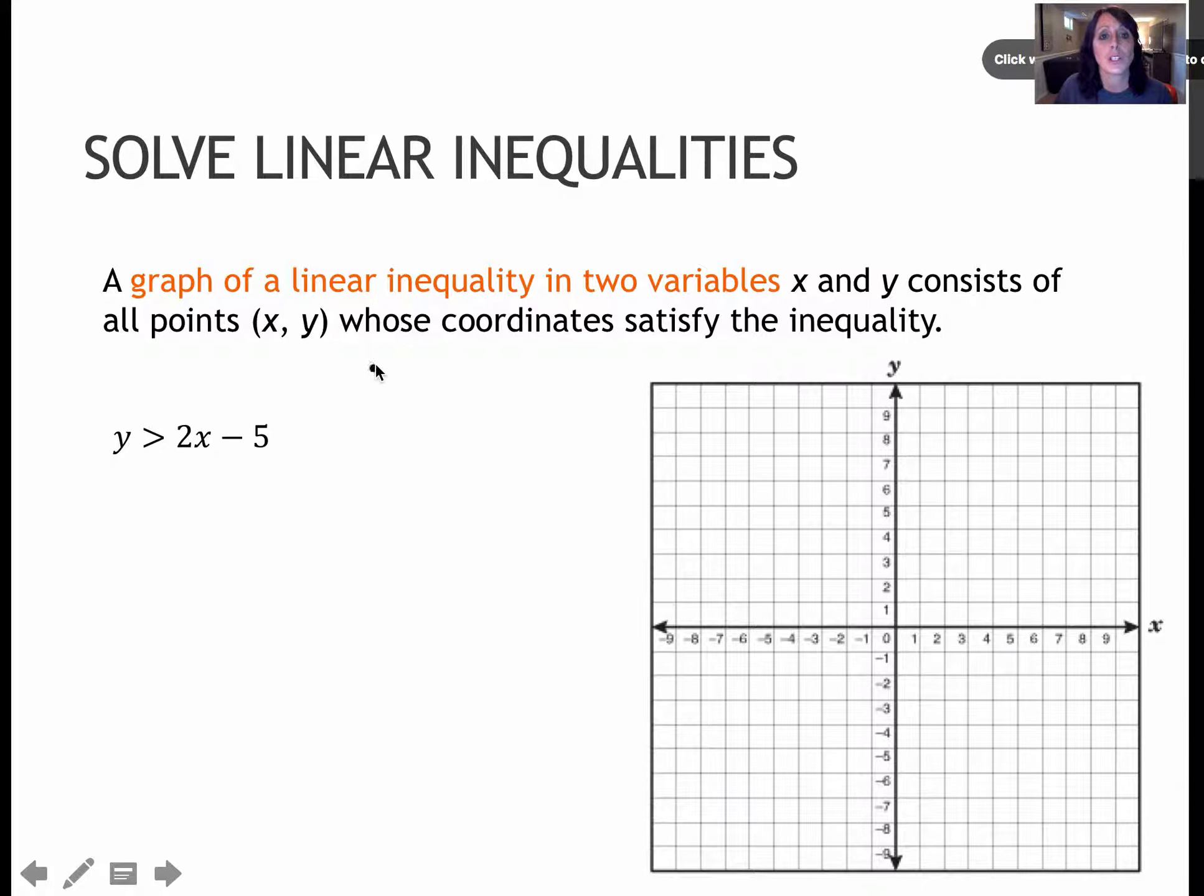So if I were normally going to graph y equals 2x minus 5, I would start at negative 5 and use my slope of 2 to go up 2 over 1, up 2 over 1, as many times as I needed to.